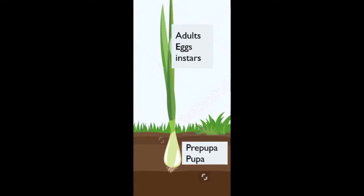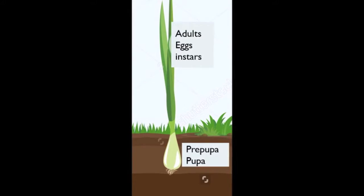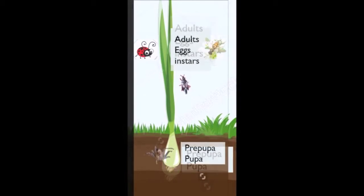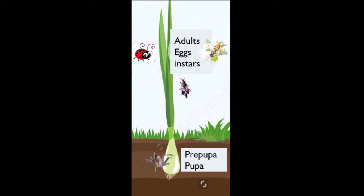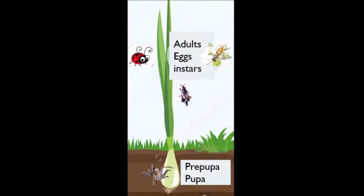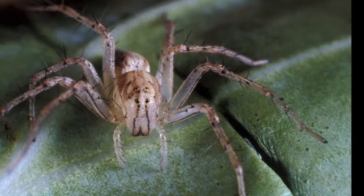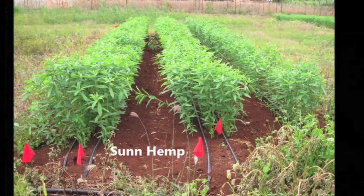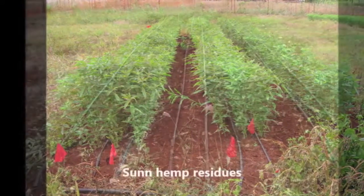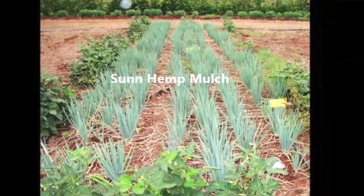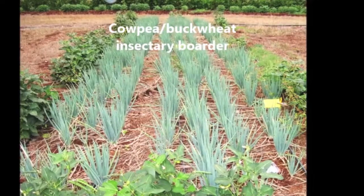It is important to know that although the eggs, instars, and adults of thrips are associated with onion foliage, part of the thrips life cycle — the pupal stage — occurs in the ground. Therefore, designing an insectary setting to manage thrips on onion should aim at attracting both foliar and soil-dwelling predators. Generalist predators such as spiders can be enhanced in onion cropping systems by planting a cover crop and mowing it down as surface organic mulch. Surrounding the cropping area with cowpea or hogweed insectary plants could further attract other natural enemies that prey on thrips and leafminers.